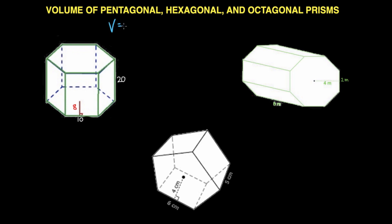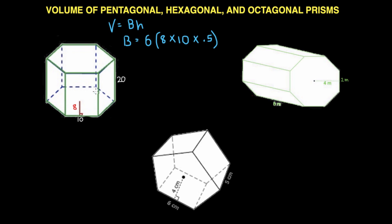Volume is going to be big B times the height, and big B is just the base. To find big B, since the base is a hexagon, we're going to distribute the 6 to the apothem which is 8 and the side length which is 10, and then multiply that by 0.5. This will make one triangle, and there are six of those in a hexagon, so that will give us the base.